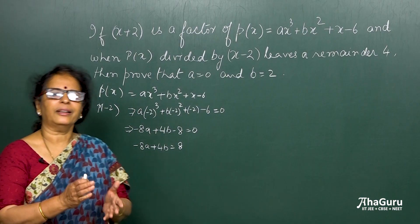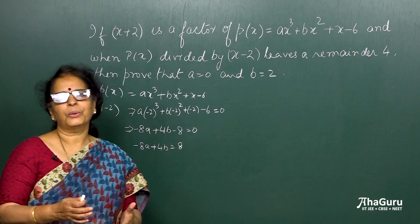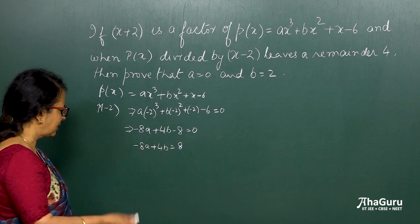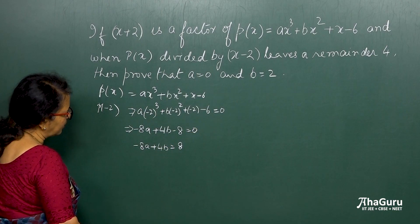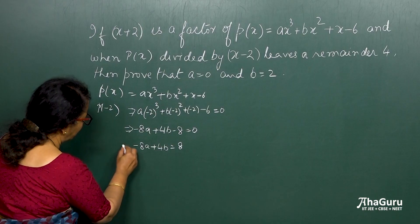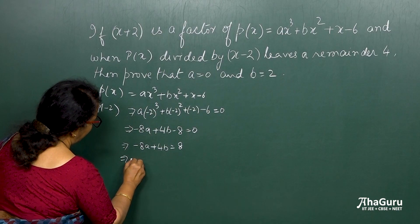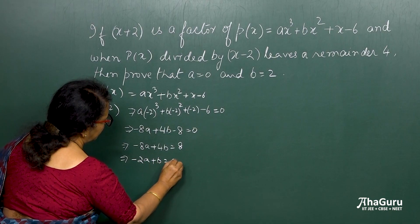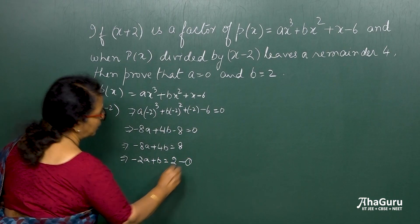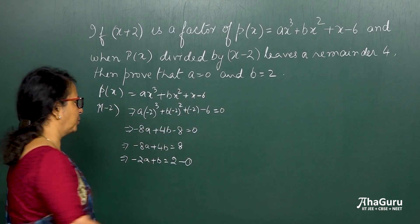The smaller the equation, the better it is with small coefficients. So dividing throughout by say 4, yes, everything is divisible by 4. So that will give me minus 2a plus b is equal to 2. So that is my first equation I got from the factor theorem.